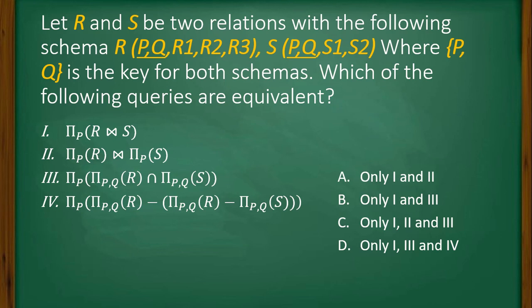Now what are the options given here? Option A: only 1 and 2 are equivalent. Option B: only 1 and 3 are equivalent. Option C: 1, 2, and 3 are equivalent. And option D is 1, 3, and 4 are equivalent.